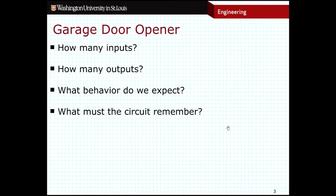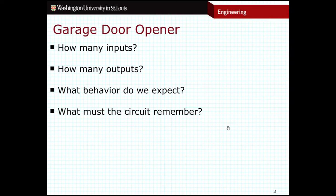Not only that, but most of the time if I click the button to close my garage door and I decide I made a mistake, I can push the button again and it will actually pause the garage door. And then if I push the button one more time, it will reverse direction and start opening up again. So the first thing we need to ask ourselves is how many inputs do we have and what are those inputs? In this particular case, I think we have four inputs to deal with.